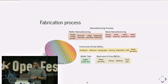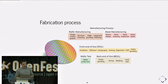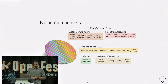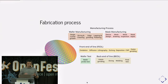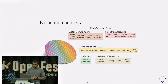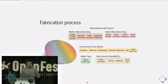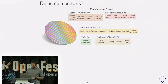Another thing fabs do is create so-called multi-project wafers, where you can share the cost. You can put different designs from different companies on a single wafer, and later they are given to the respective companies. This way the mask cost is split between all companies sharing the wafer.